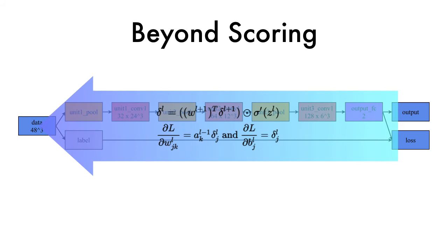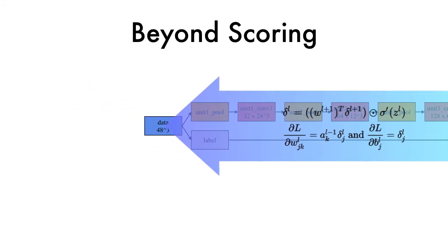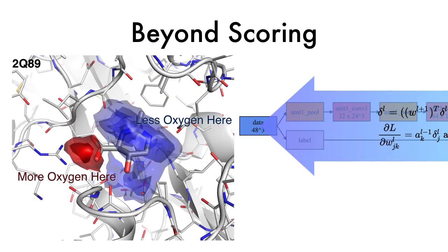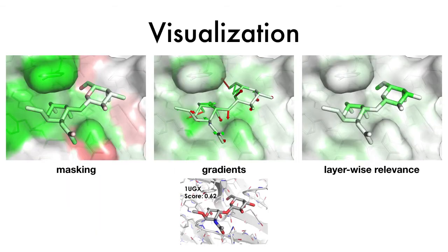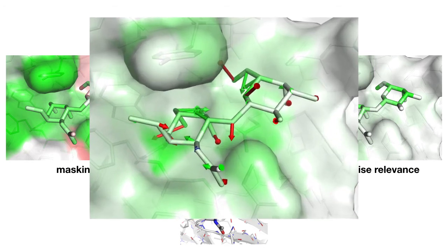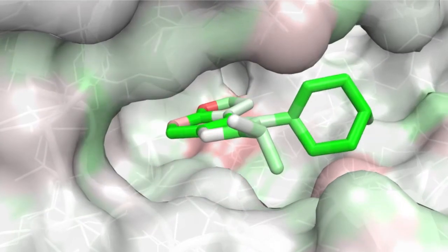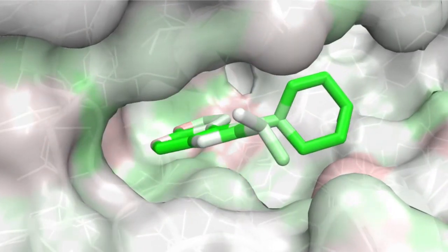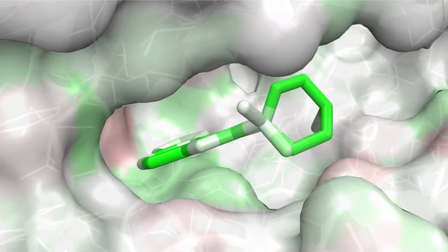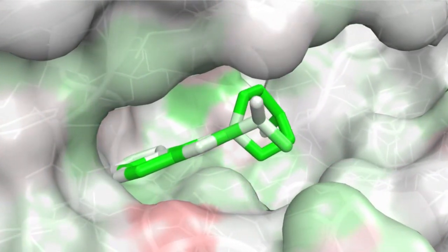we can use these weights to describe how the input itself can be made better. By mapping this backpropagated information onto atoms, we can produce informative visualizations and, more importantly, generate atomic gradients that we can treat as forces to optimize molecules while respecting physical and chemical constraints.